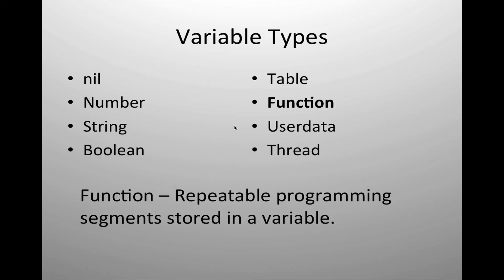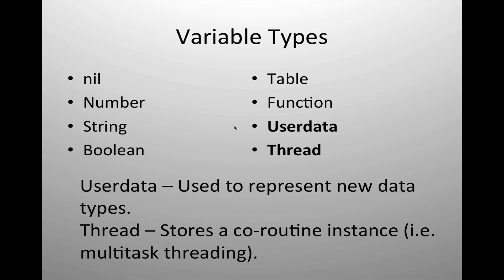The last three variable types we'll go into in further depth in later lessons. But for now, I'm just going to explain what they are. The function variable type allows us to assign a full function program segment to a variable. Since Lua is capable of storing functions as a variable type, it gives us a great deal of flexibility and dynamic programming capabilities within our code. We'll cover functions in greater depth in a later lesson. The last two data types are user data and threads. Again, we'll cover these in later lessons. These are much more complex concepts. The user data allows us to represent new data types and be able to store that in our variable type. Threading allows us to be able to store a coroutine instance inside of a variable. In other words, it allows us to do multitask threading and be able to store those threads inside of a variable type.